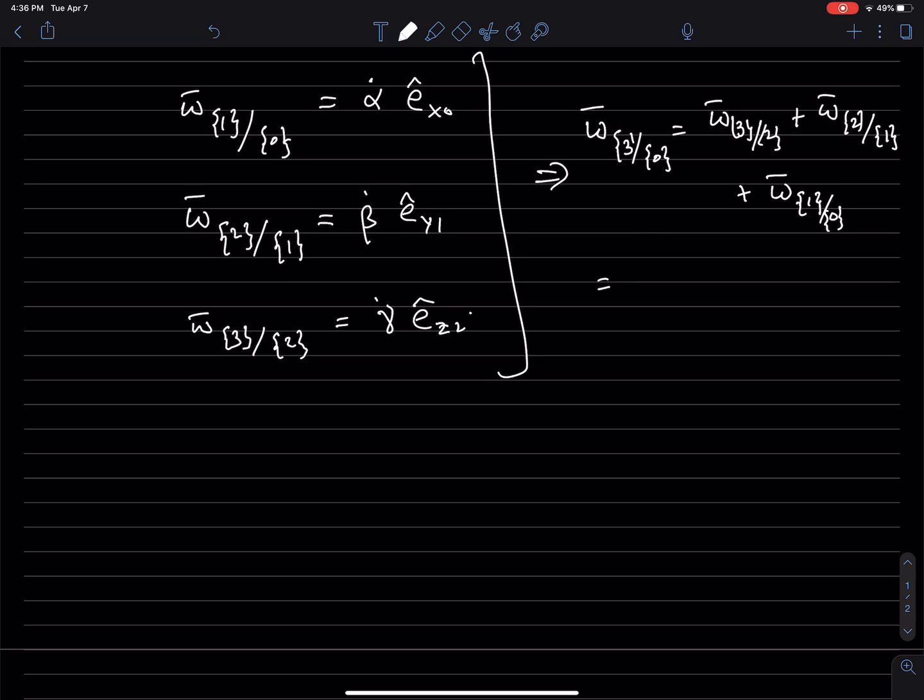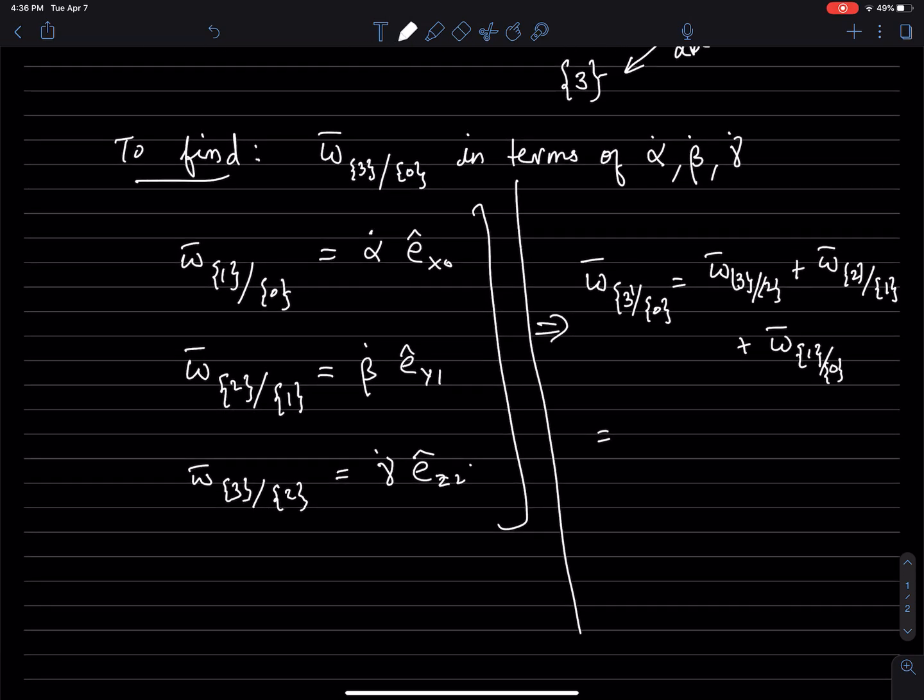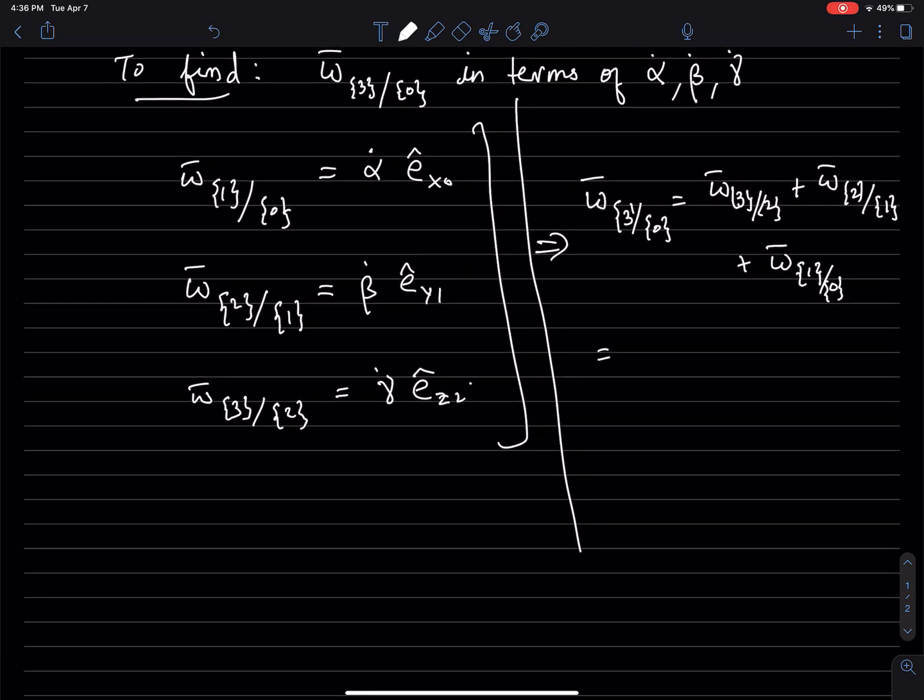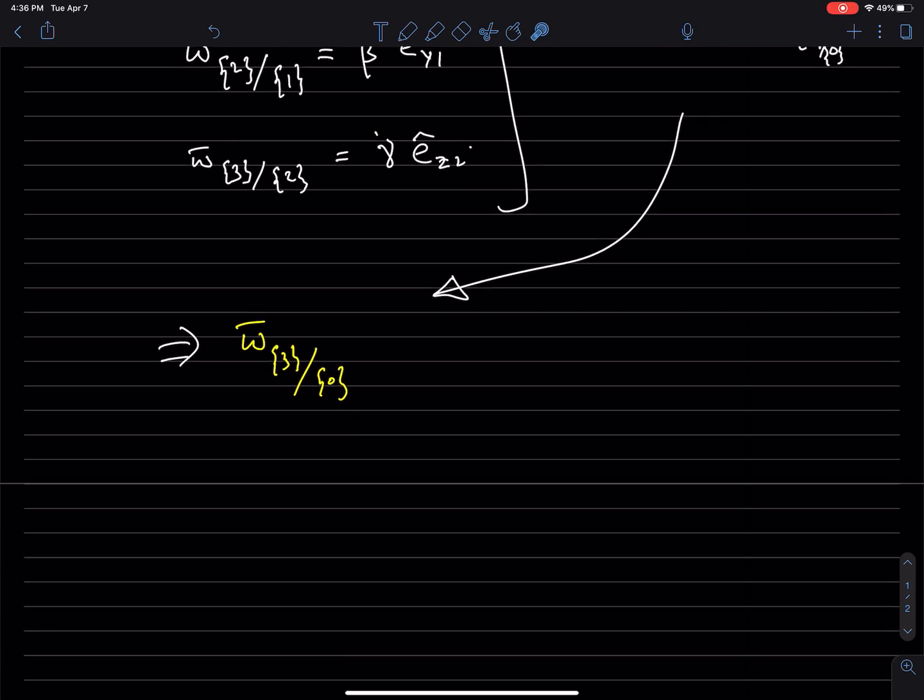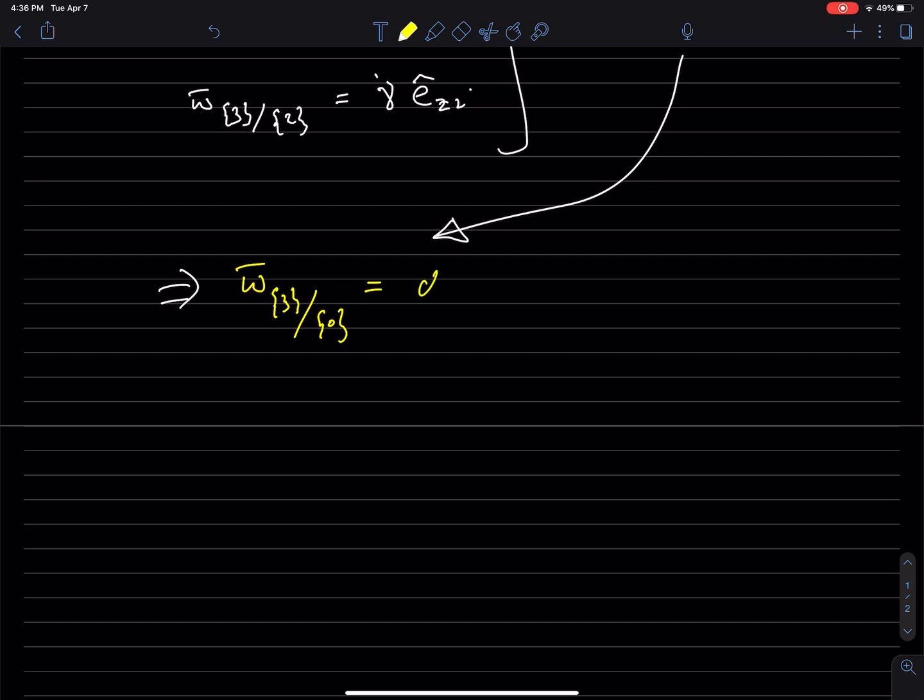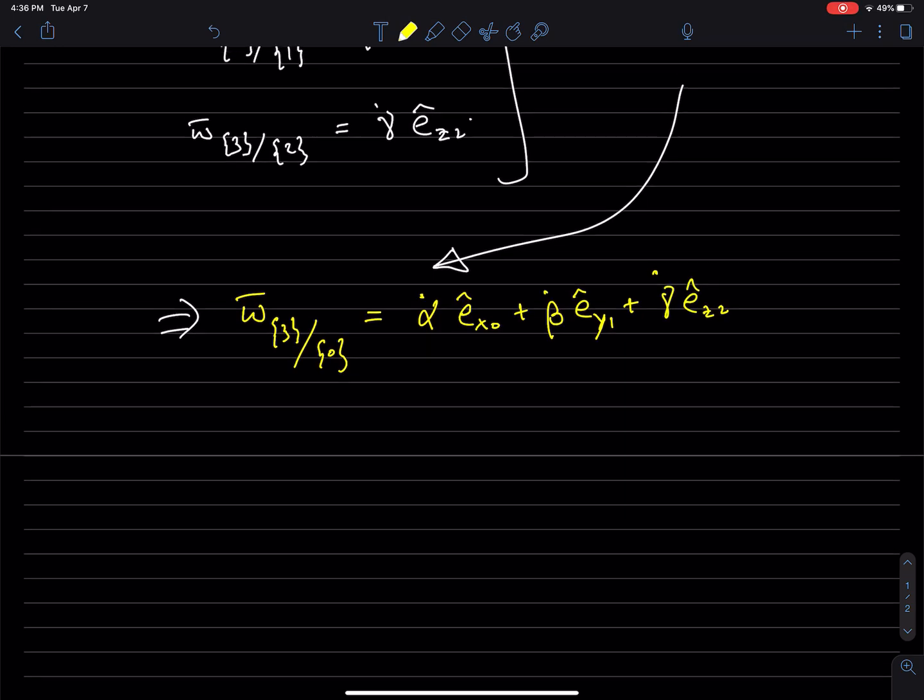And we can write that as... So just to be clear, this is a separate expression. So this implies omega 3 with respect to 0 is basically the sum of these three angular velocities. And that's it.